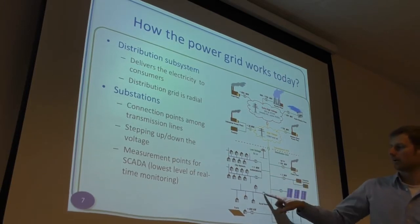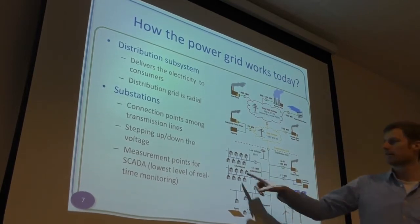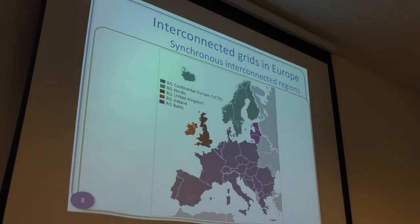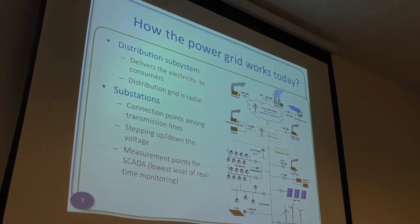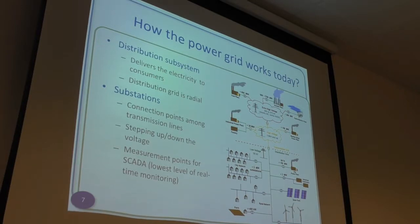SCADA is used to monitor performance metrics of the power network — typically a new measurement every four seconds. But the measurements are only at these substation points, meaning you don't have measurements from further into the network, so you don't actually know what's going on at the individual households. You can also send commands through SCADA. The main function of SCADA is collecting monitoring data and then taking action — there's a control center with someone monitoring and a decision-making step.